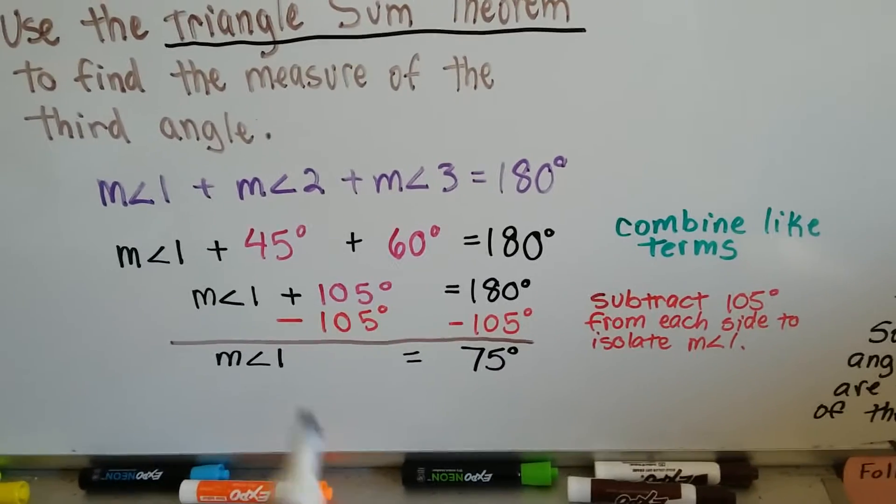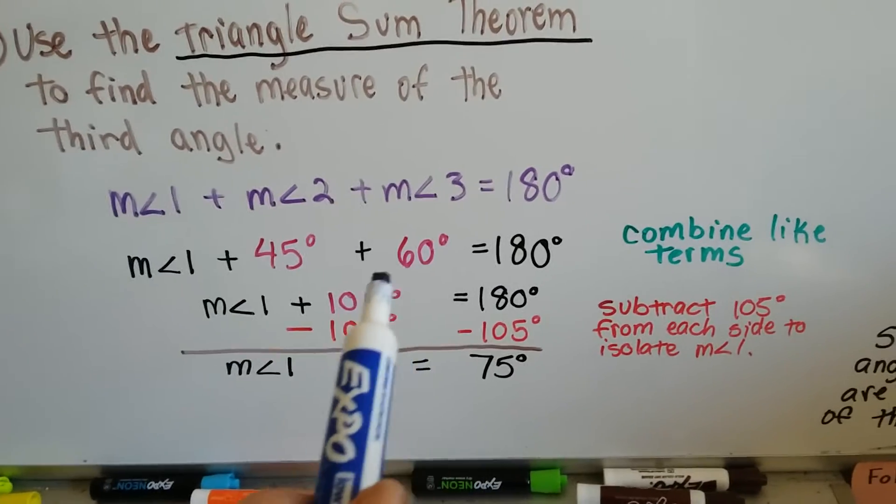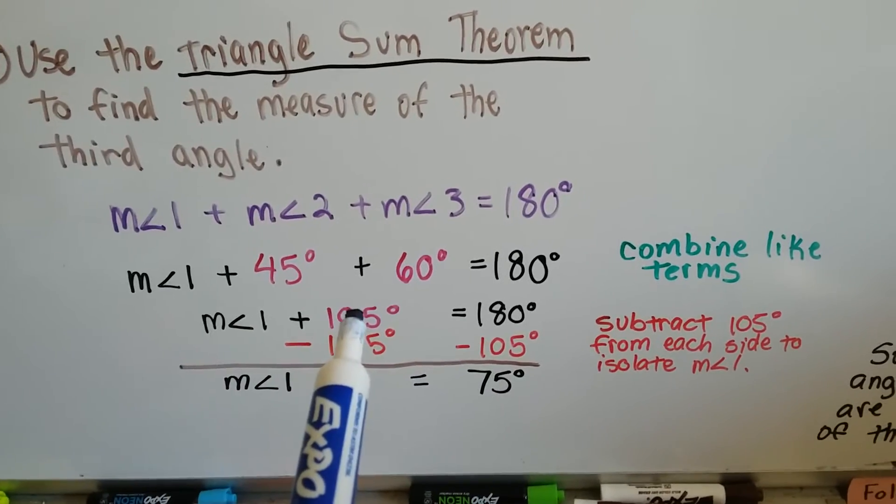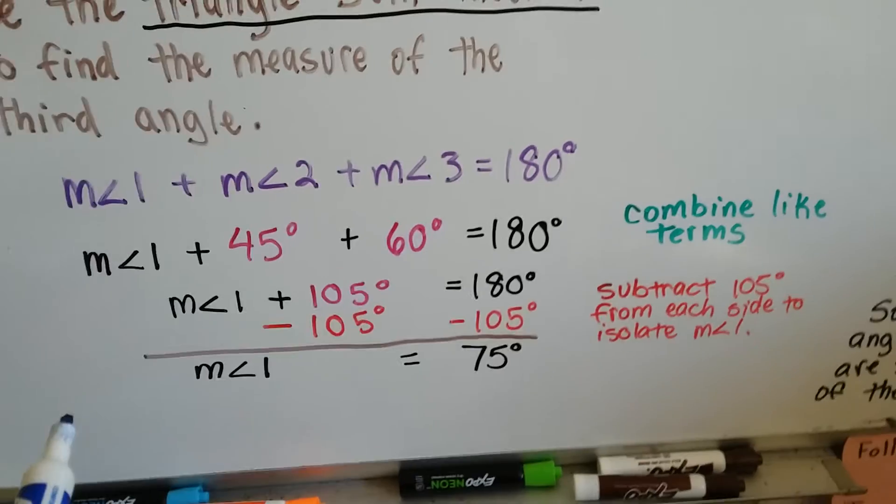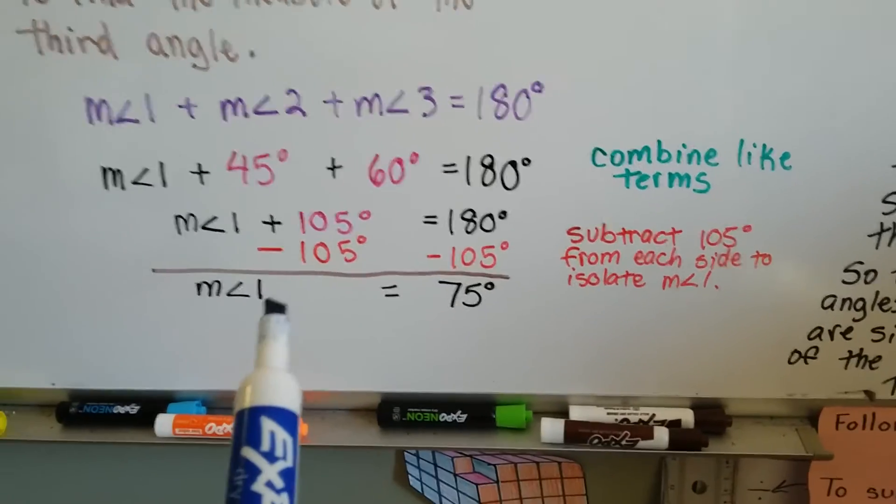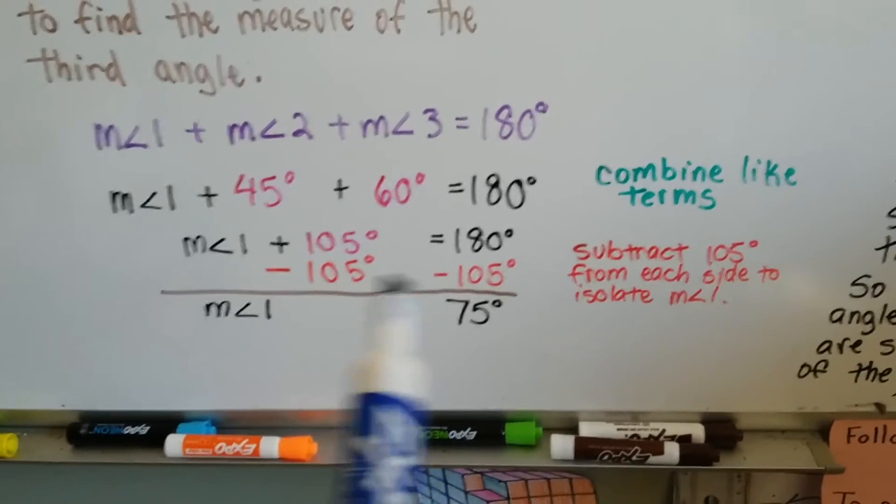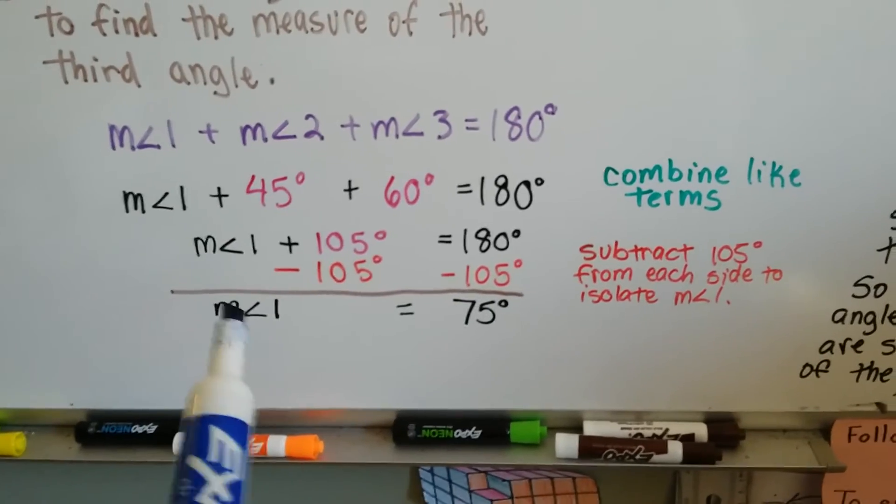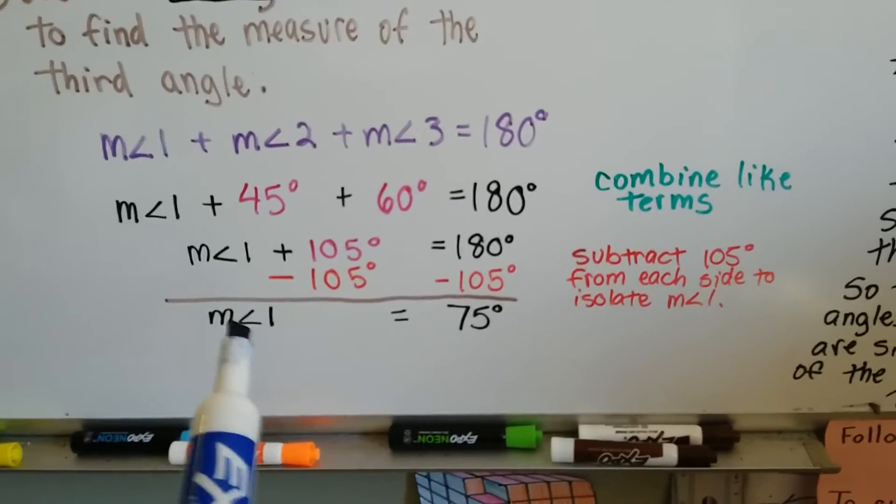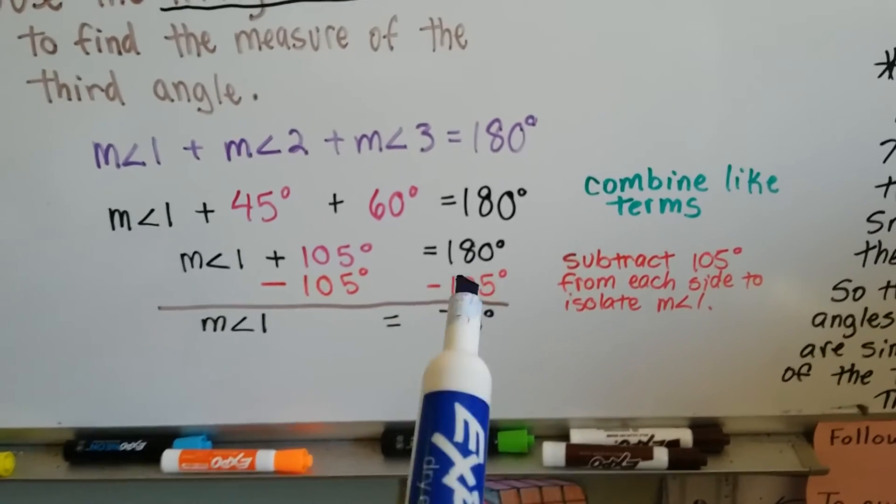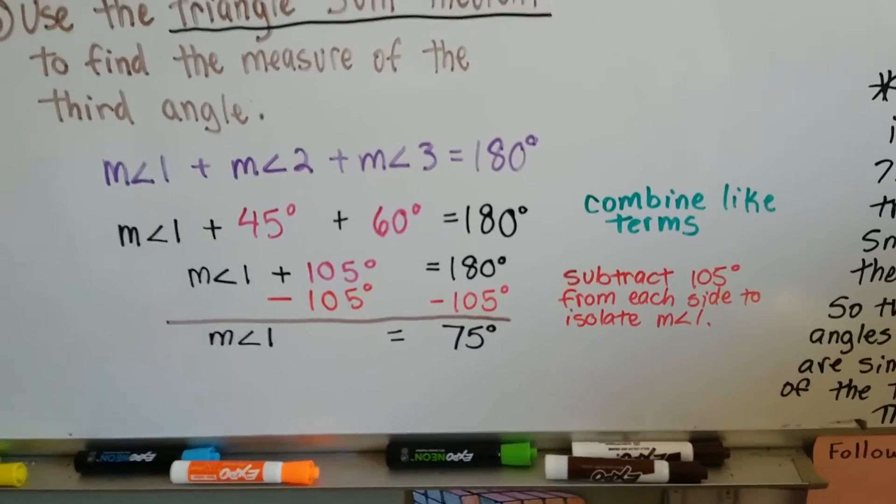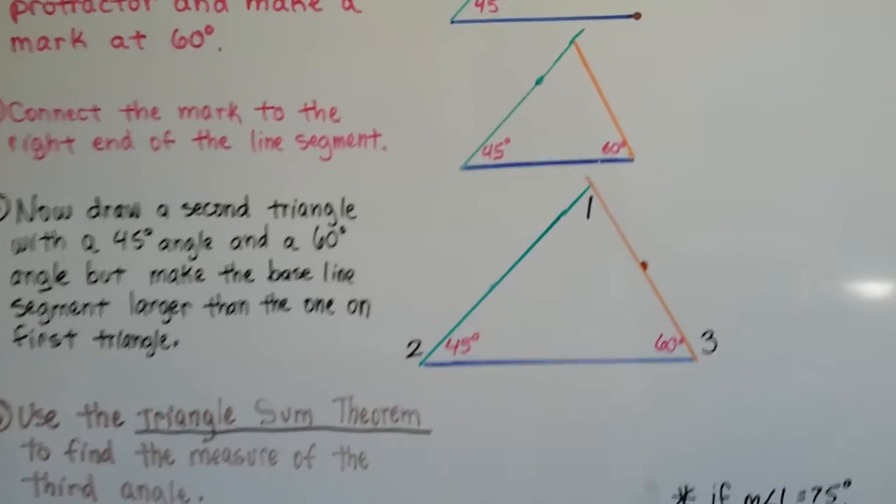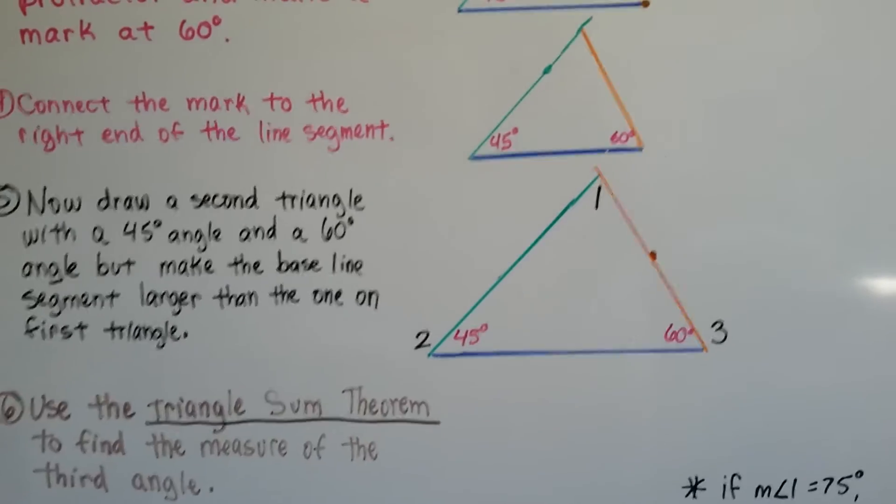Now we can combine like terms, the 45 and the 60. Well, 40 and 60 makes 100, and the extra 5 makes 105. Now, algebraically, we can see what we need to do. For an inverse operation, we just subtract 105 from each side, and that'll isolate this measure of angle 1 on this side, and 180 degrees minus 105 degrees is 75 degrees. So we know the missing angle measure for angle 1 is 75 degrees.